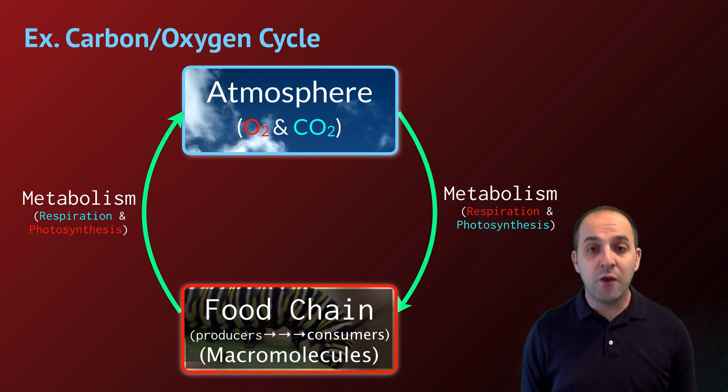So the abiotic reservoir for carbon and oxygen that living systems have access to is the atmosphere. Oxygen exists as O2, and carbon dioxide exists as CO2. And I've color-coded them here in order to track the processes that are going to bring them into and take them out of the biosphere. Those processes are metabolic processes. Specifically, respiration is going to be one process that's going to take oxygen out of the atmosphere for use in biological systems. And photosynthesis is going to be the main process that takes carbon dioxide out of the atmosphere and incorporates it into biological systems.